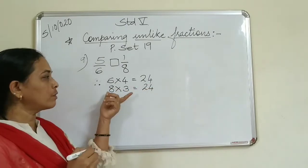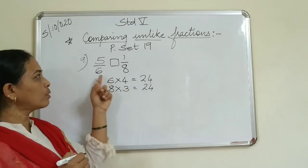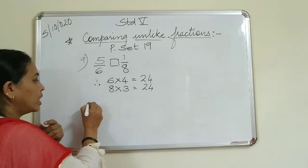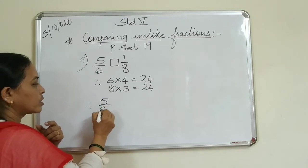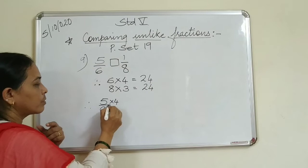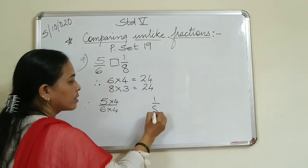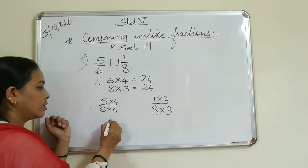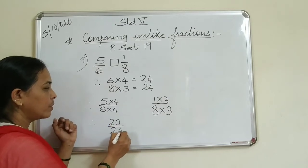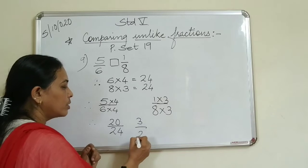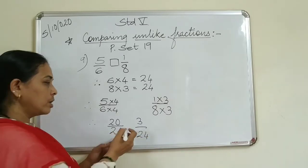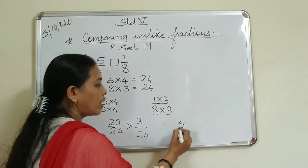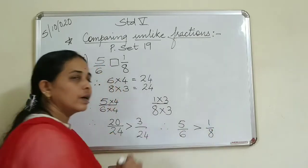The common denominator is twenty-four. We are going to multiply 5 upon 6 by four and 1 upon 8 by three. So: five into four over six into four, and one into three over eight into three. Five fours are twenty, six fours are twenty-four; one three is three, eight threes are twenty-four. So 20 upon 24 versus 3 upon 24 - twenty is bigger, therefore 5 upon 6 is bigger than 1 upon 8.